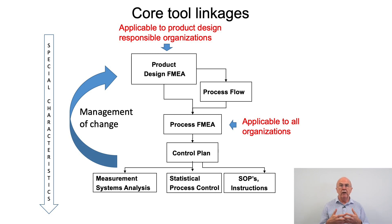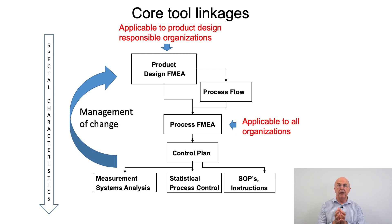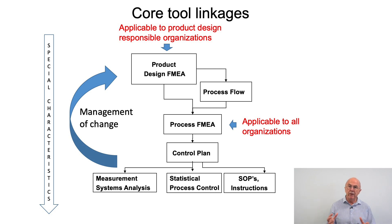We have to make sure that all the linkages are together. We need to take the output from the design FMEA and decide through the process flow how we are going to make the product. The design FMEA can also provide an input into developing the process FMEA. The process FMEA output needs to provide an input into the control plan, which will link to measurement system analysis, statistical process control, and link to the relevant standardised work or work instructions. We need to keep all these linkages up to date if we make changes to the product or process.